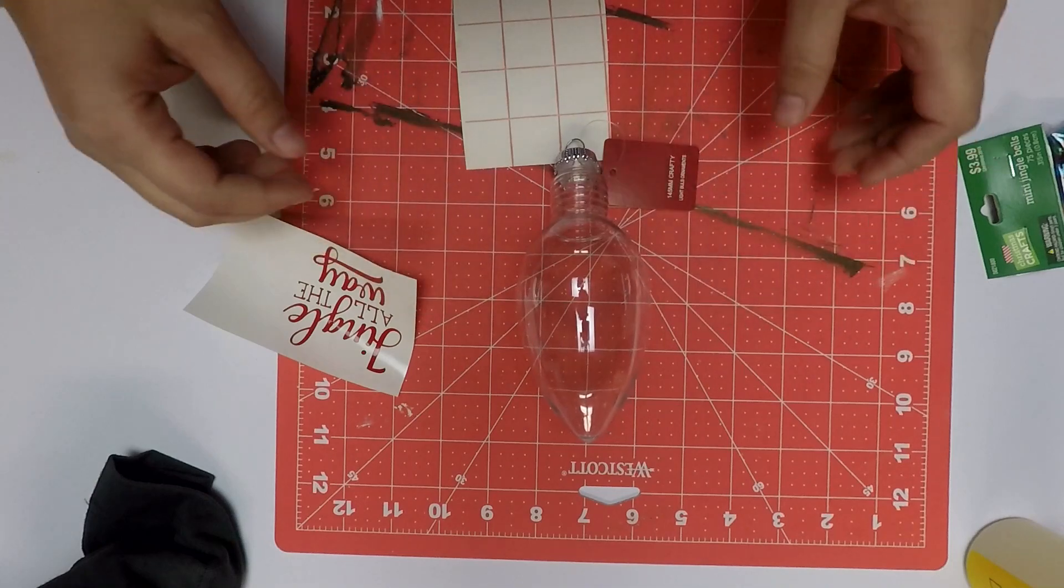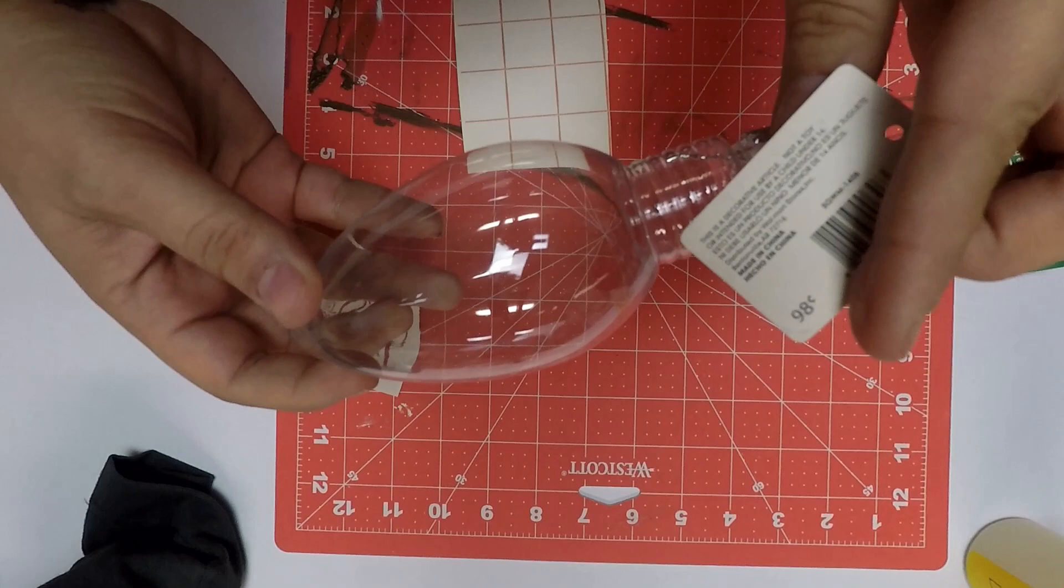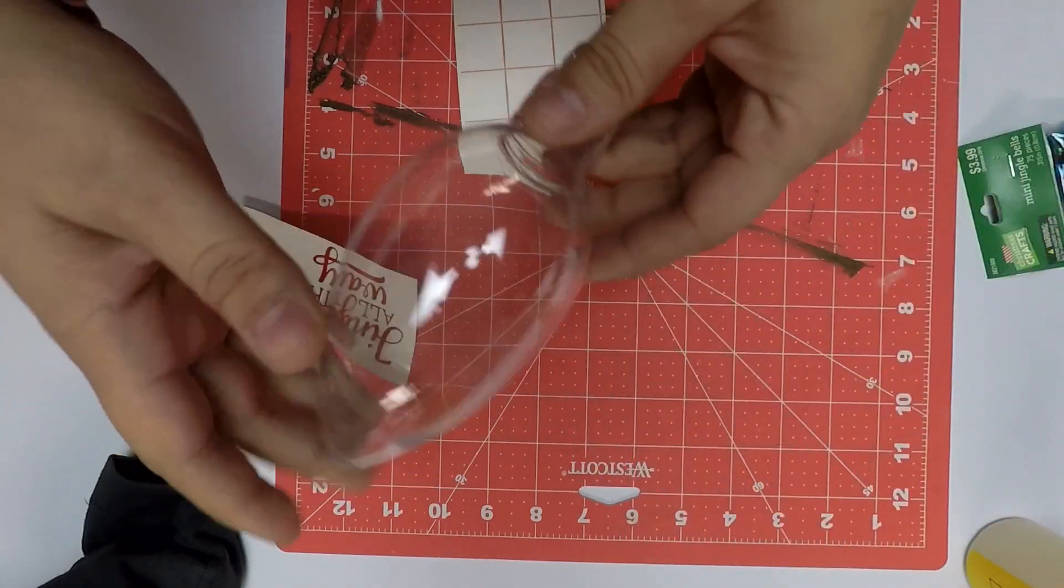For today's Craftsmas episode, we're going to work on this bulb-shaped ornament, which is 98 cents from Walmart.